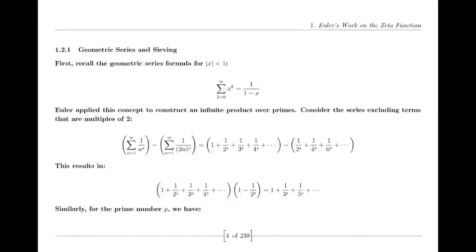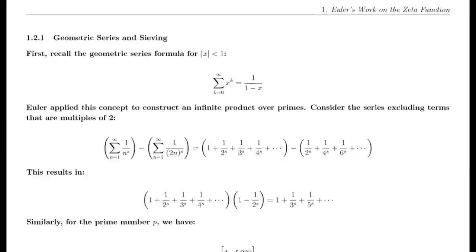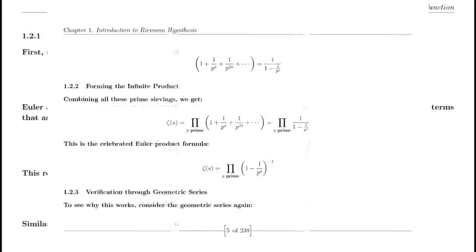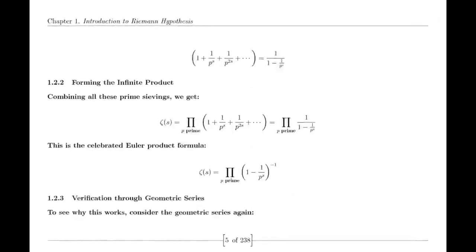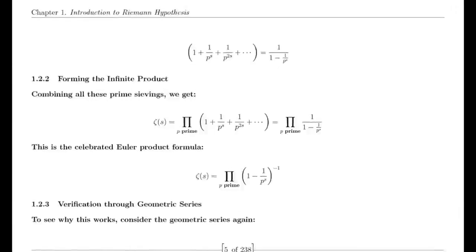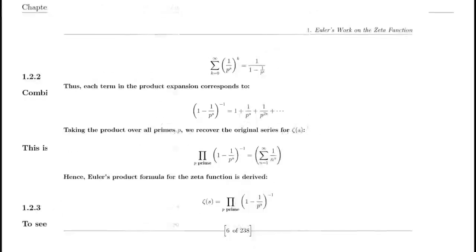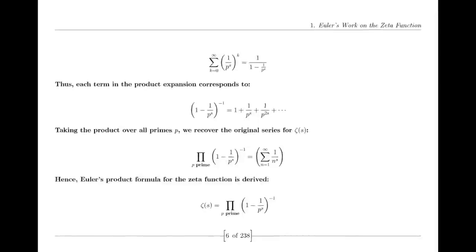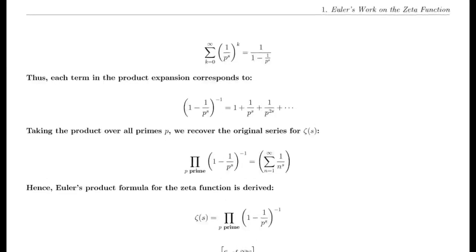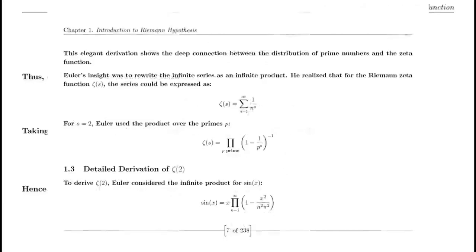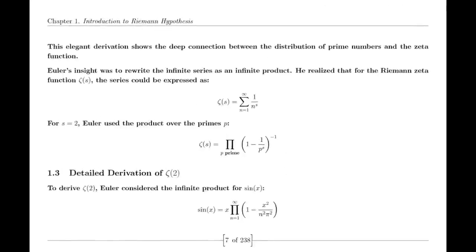Riemann also made use of the Jacobi theta function, which has significant applications in various areas of mathematics. The theta function's series representation and modular properties were instrumental in Riemann's derivation of the functional equation for the zeta function. This equation is crucial for understanding the zeta function's behavior across the complex plane and highlights its intricate connections to other mathematical functions.